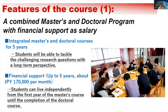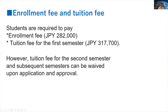The first unique feature is that this is a combined, integrated master's and doctoral program with financial support as salary. Because this is a five-year program, students are able to tackle difficult but fundamental questions with a long-term perspective. We offer financial support of up to five years, about 170,000 Japanese yen per month.